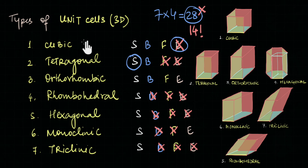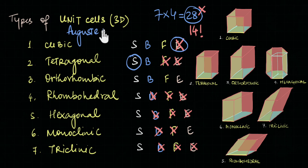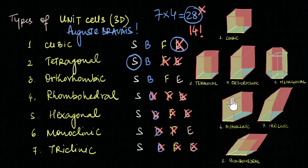All this hard work was first done by the French mathematician Auguste Bravé, and so all these lattices are called the Bravais lattices.